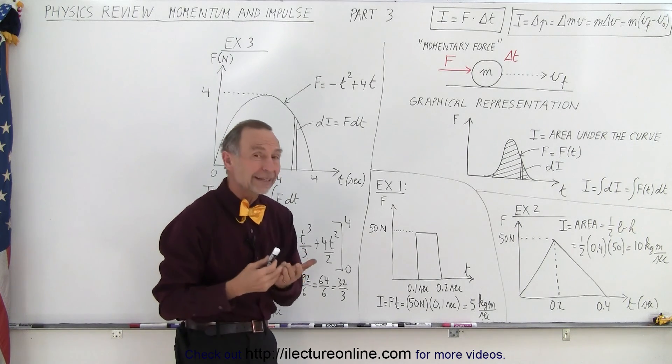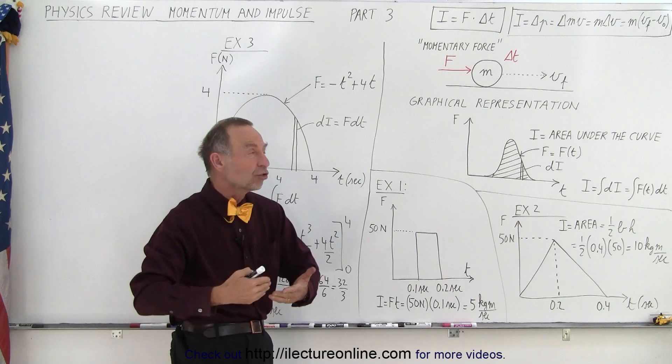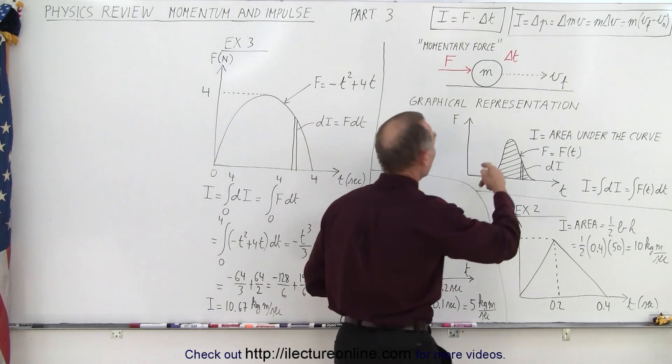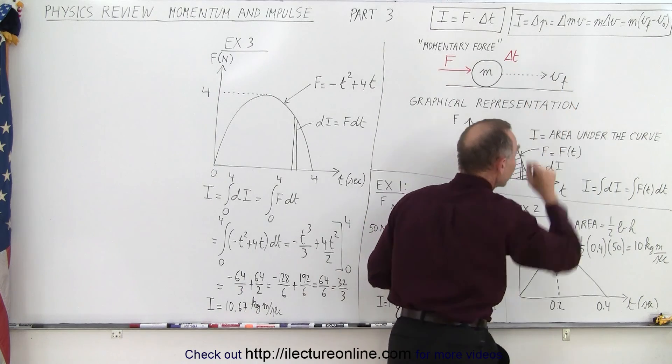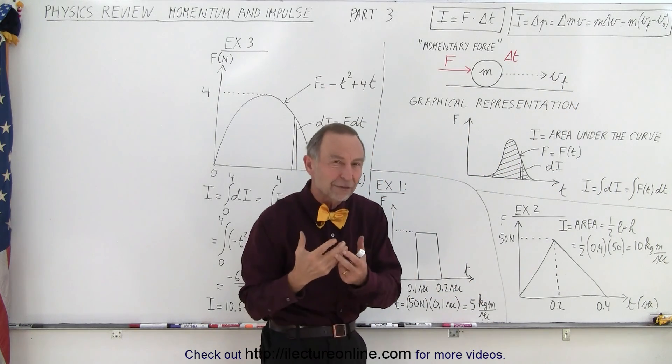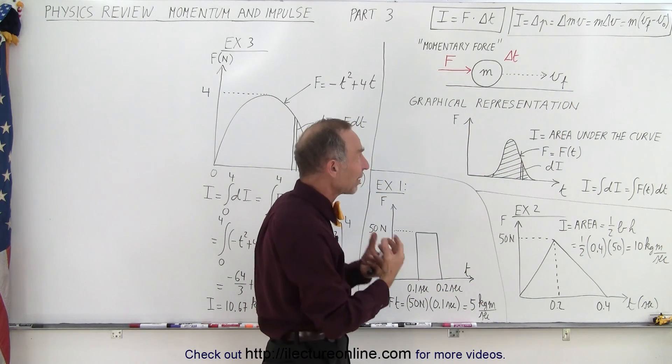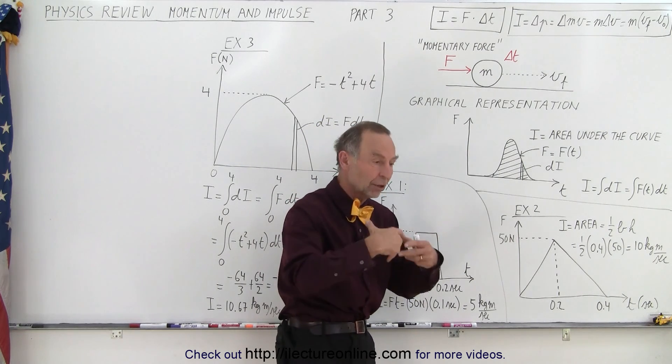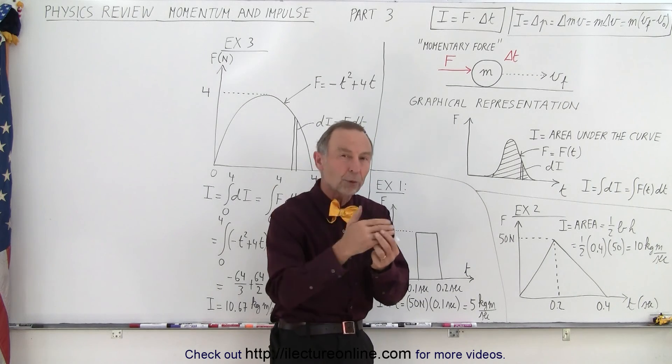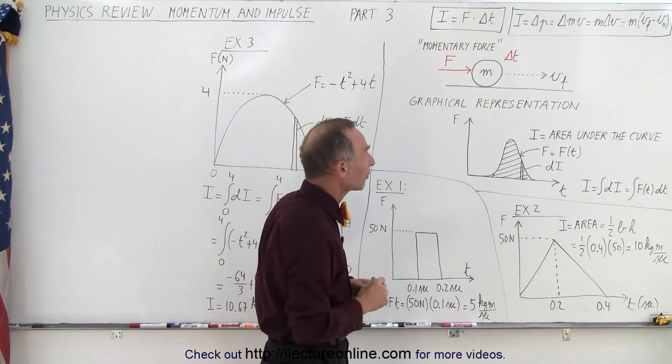Now we can also talk about impulse in terms of how it changes the momentum of the object. Notice that a force applied to an object for a small amount of time will make the object move. It will give it some final velocity, v final. And so m times v final will then be its momentum that it has acquired due to that force applied over a small amount of time.